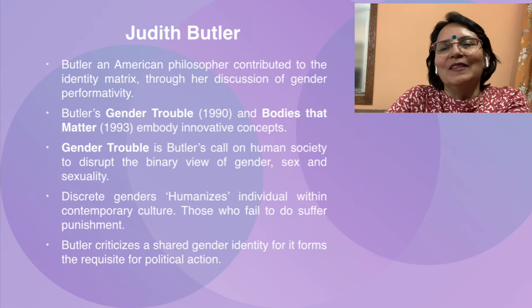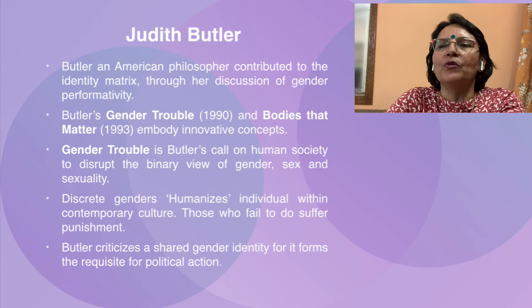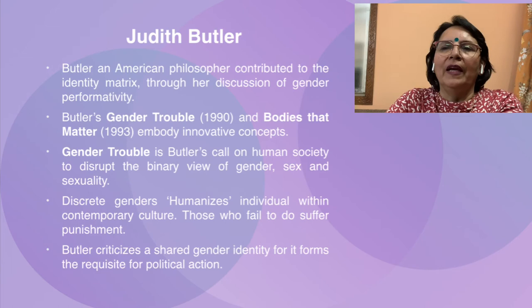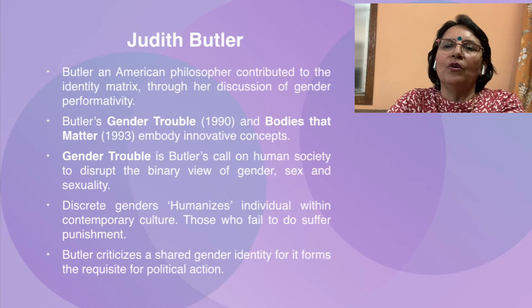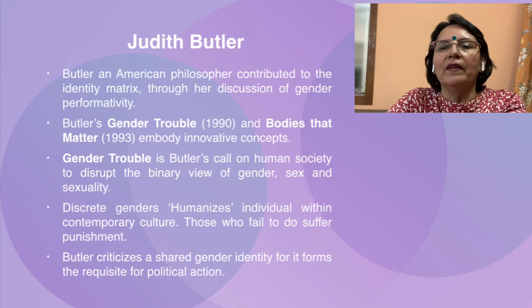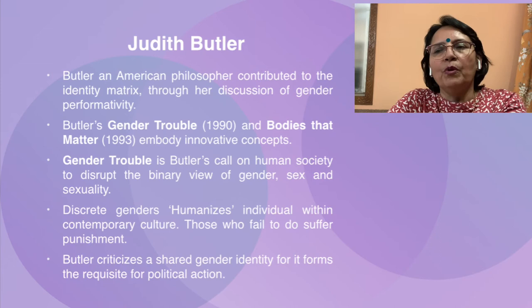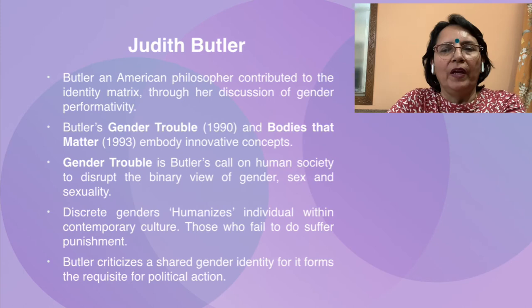Judith Butler is an American philosopher who contributed to the identity matrix. Gender Trouble appeared in 1990 and Bodies That Matter appeared in 1993, embodying her most innovative concepts. Gender Trouble is Butler's call on human society to disrupt the binary view of gender, sex, and sexuality. She calls for discrete genders as this would humanize individuals within contemporary culture, and she believes that those who fail to perform gender correctly and face punishment are being dehumanized.